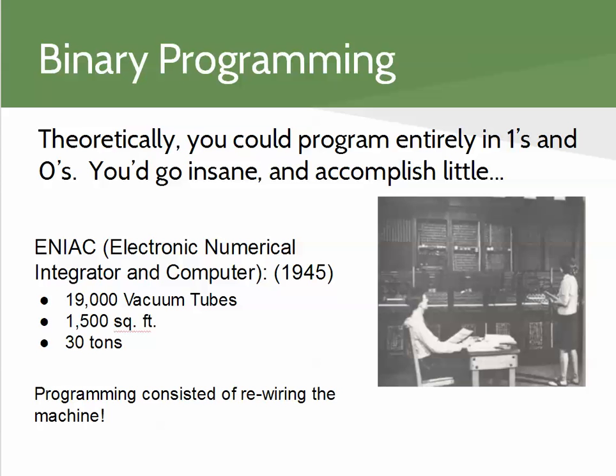The ENIAC was maybe not necessarily the first computer, but the first well-known computer. It was the size of a building and had what amounts to 19,000 vacuum tubes — the predecessor to transistors — so it essentially had the ability to store 19,000 ones and zeros. Today's computers can hold trillions of ones and zeros, and of course they fit in our pockets. So we've come a long way.